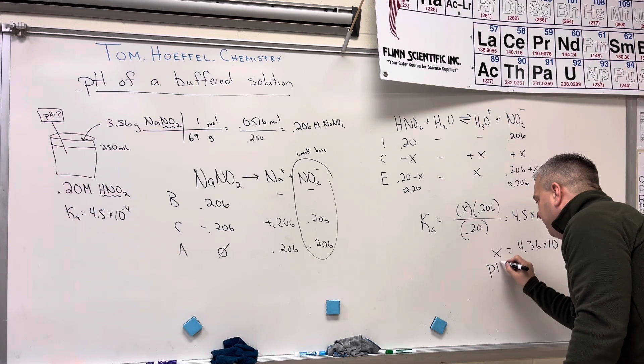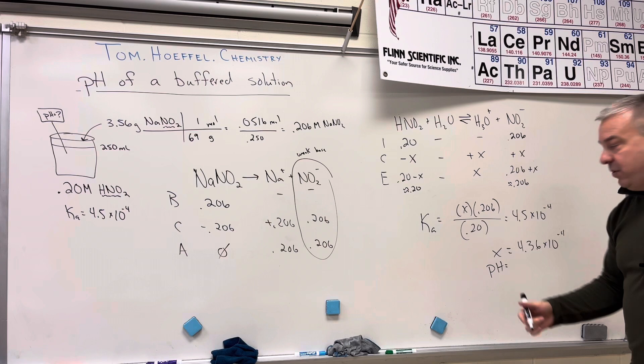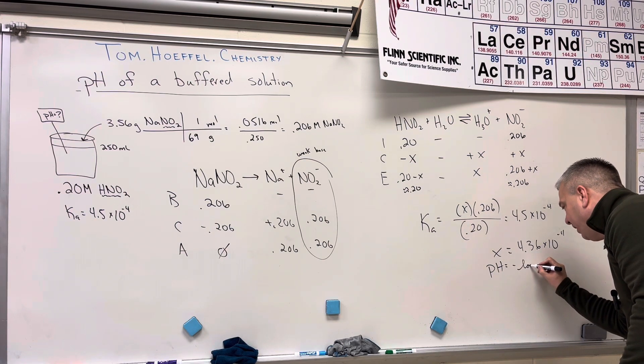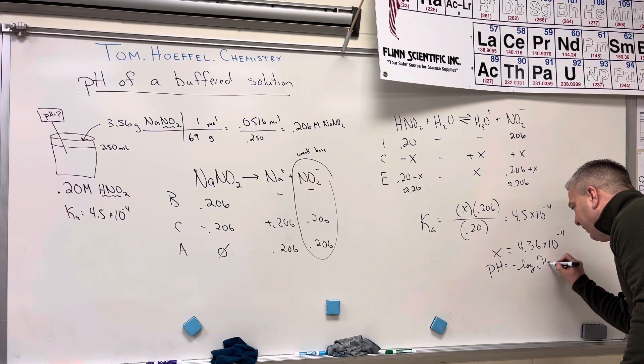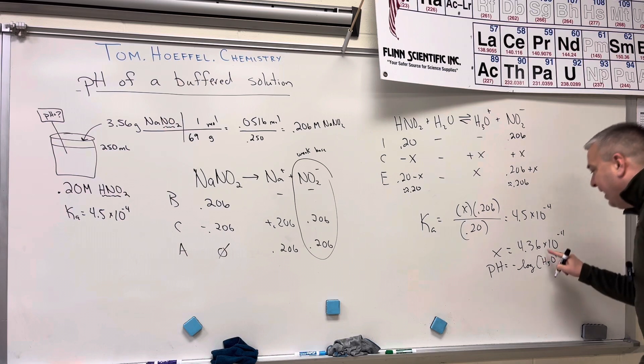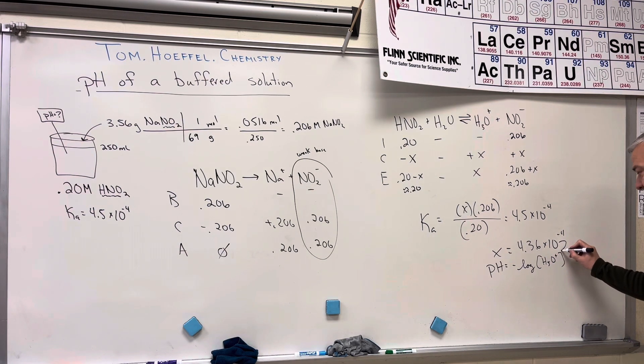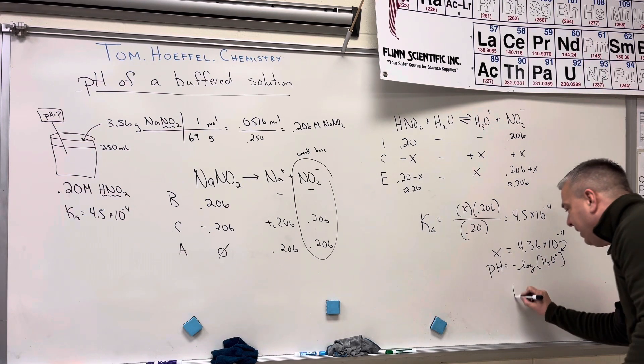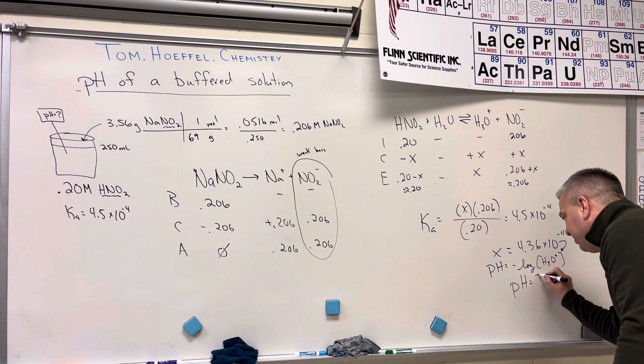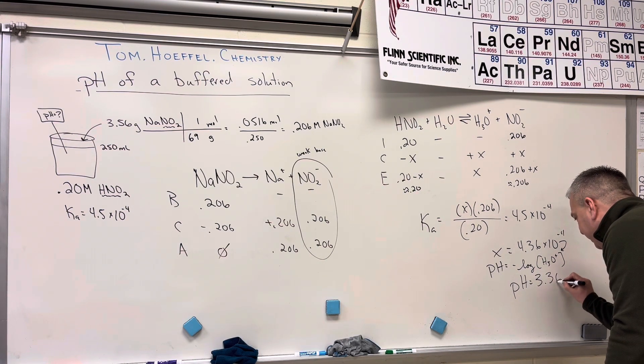So if I wanted to get the pH, the pH is always equal to the negative log of the concentration of hydronium ions. And if this is the concentration of hydronium ions, I'll plug it in and I'll get a pH that's equal to 3.36.